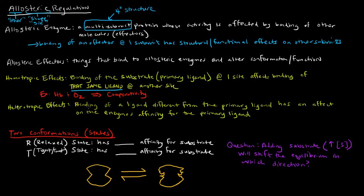How does that differ from heterotropic effects? Binding of a ligand different from the primary ligand has an effect on the enzyme's affinity for the primary ligand. Keeping hemoglobin as the example, protons, carbon dioxide, and 2,3-BPG — which we discussed in the context of the Bohr effect — are ligands that are not the primary ligand; they're not oxygen. But they can bind hemoglobin and affect O2 affinity. Specifically, they all decrease it, which makes them allosteric inhibitors.